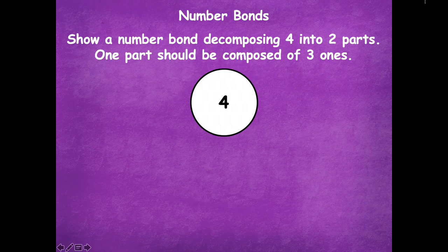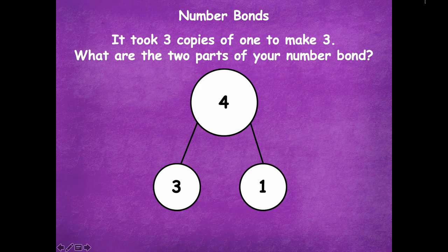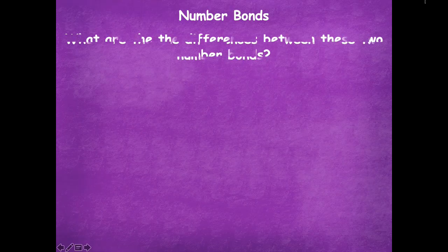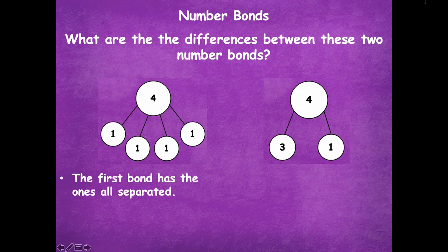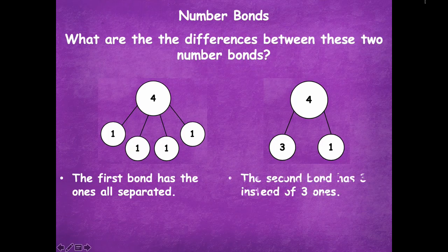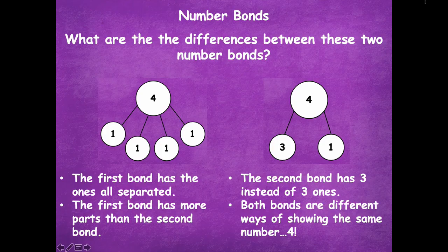Here's what I came up with. The whole is four. One of the two parts should be three ones, and the other part has to be one, because three plus one is four. It took three copies to make three. So the two parts of our number bond are three ones and one one. What are the differences between these two number bonds? The first number bond has all the ones separated — four parts. The second bond has three and one as its two parts. The first bond has more parts than the second, but both bonds are different ways of showing the same number: four.